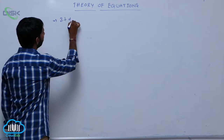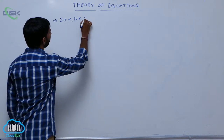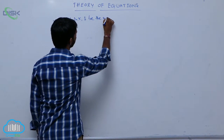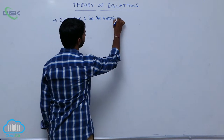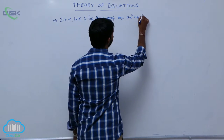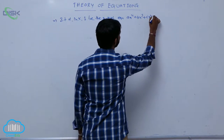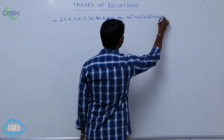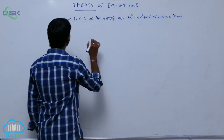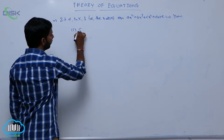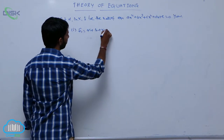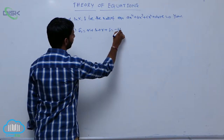If alpha, beta, gamma and delta are the roots of the equation Ax⁴ + Bx³ + Cx² + Dx + E = 0, then S1 is equal to the sum of roots, that is alpha plus beta plus gamma plus delta, which equals minus B by A.